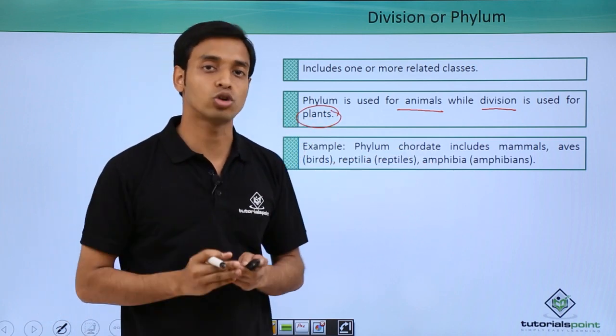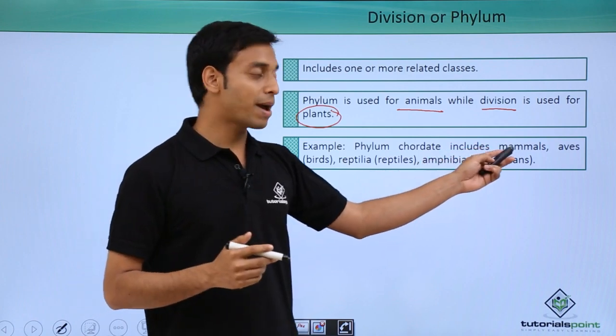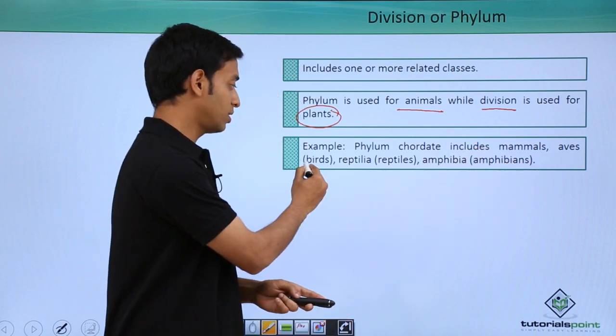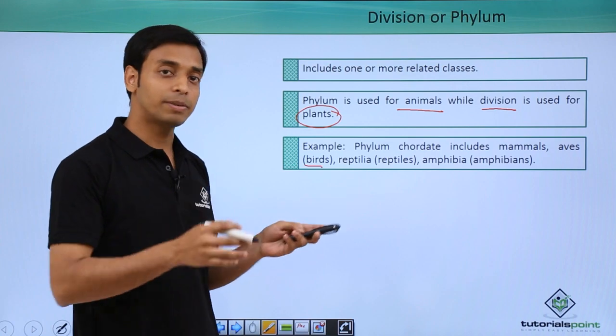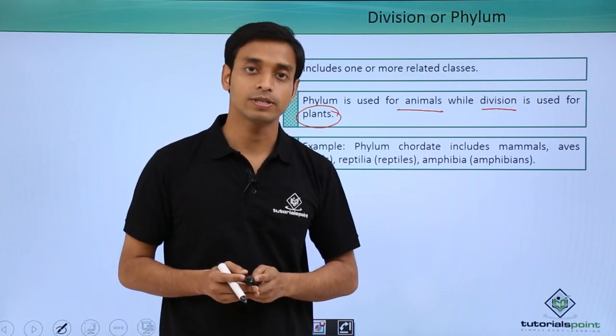A very good example is the phylum Chordata, that means the presence of notochord. This includes Mammalia, Aves which are birds, Reptilia that means reptiles, and Amphibia which are amphibians.